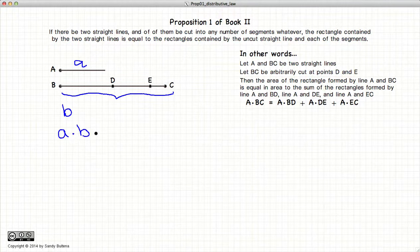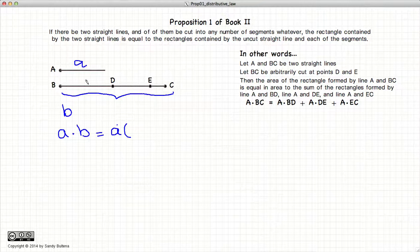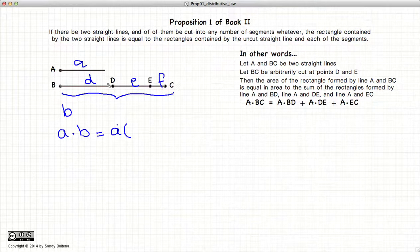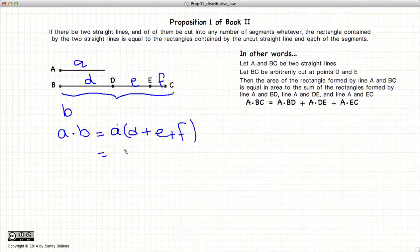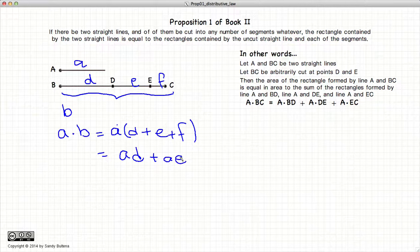So what this proposition states is that if we have A times B, or A times D, E, F, where these are the lengths of the individual segments of our line, so A times D plus E plus F is going to be equal to A times D plus A times E plus A times F.